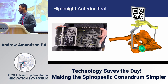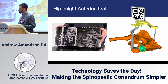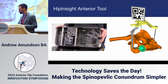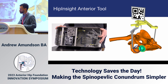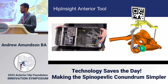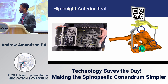The Hip Inside anterior tool comes as a single tray with no disposables — everything just goes through the wash. The tool has three legs that go on the patient: a base point leg that goes on the middle ischium just inferior to the socket, and then two points that go on each ASIS.